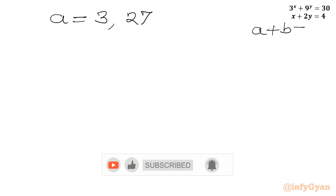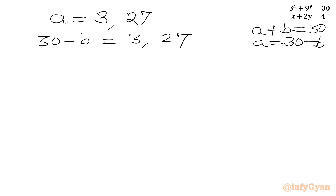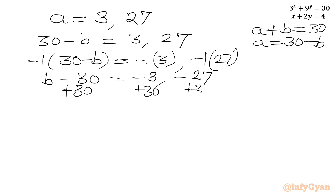Our first equation was a + b = 30, so b = 30 − a. When a = 3, b = 30 − 3 = 27. When a = 27, b = 30 − 27 = 3.